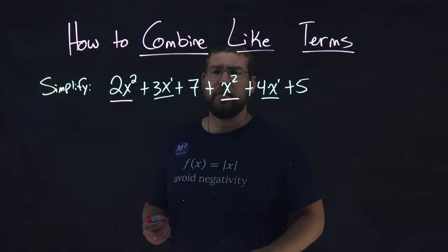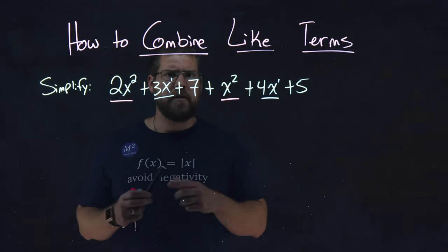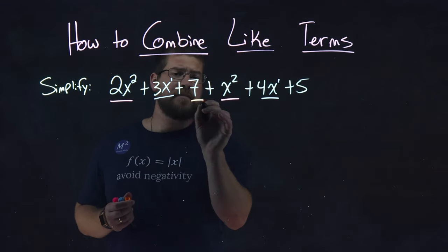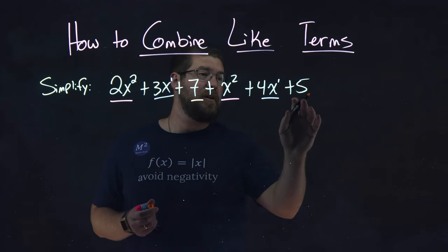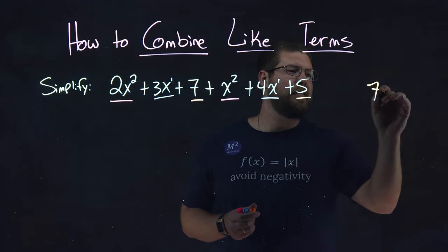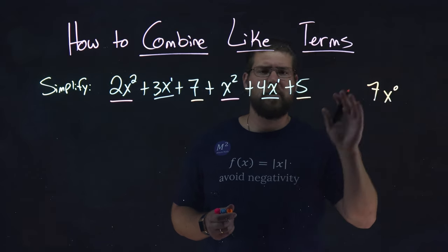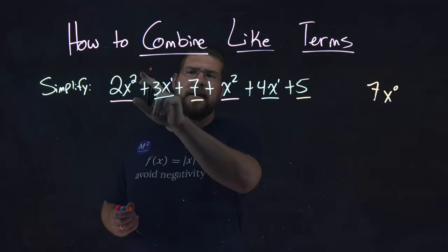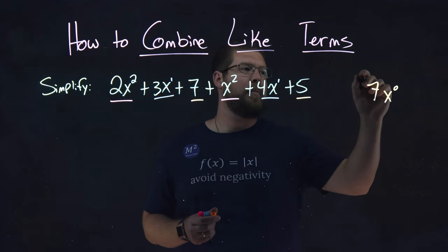Moving on, we just have a simple number, 7, and another one that's just a number is 5. Now remember, we can rewrite that as 7x to the 0 power. So it's kind of weird to see that there. 2nd power, 1st power, 0 power.